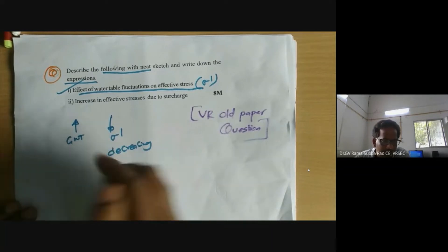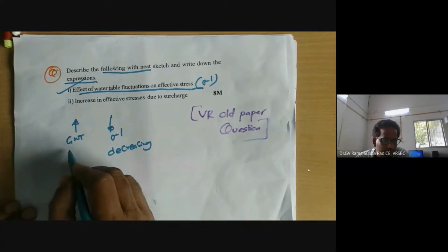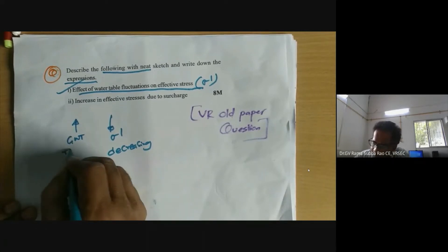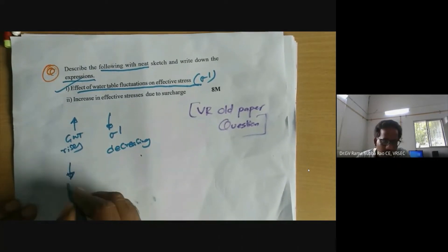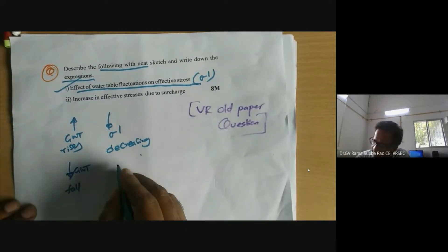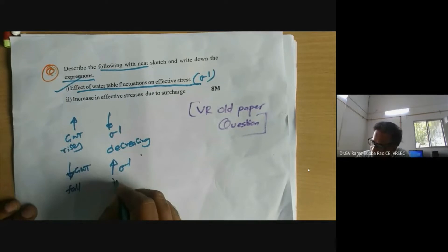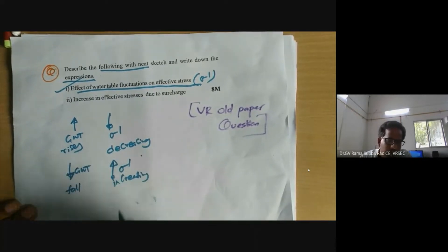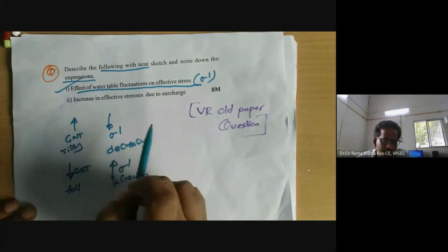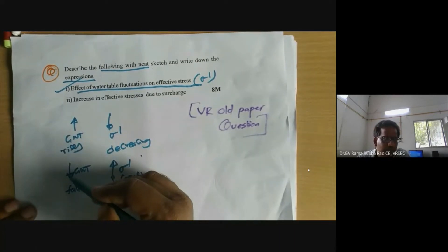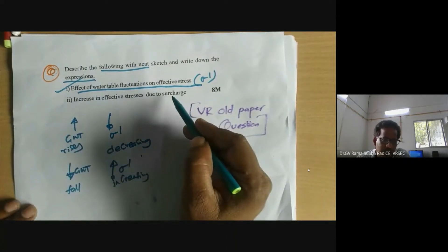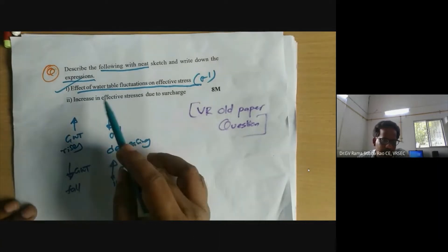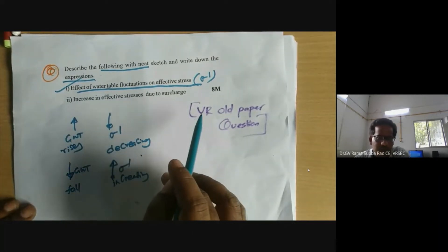As clearly described in our previous lecture, if the water table rises, effective stress decreases. In other words, if the water table falls, effective stress is increasing. The water table is a highly influential factor which influences effective stress. That is why this discussion is about the effect of water table fluctuations on effective stress. Let us proceed now.